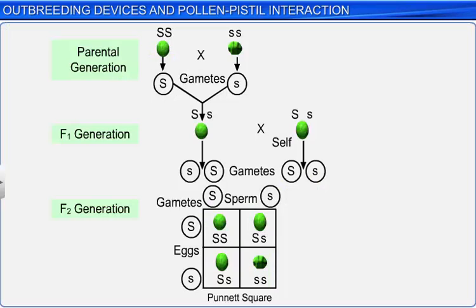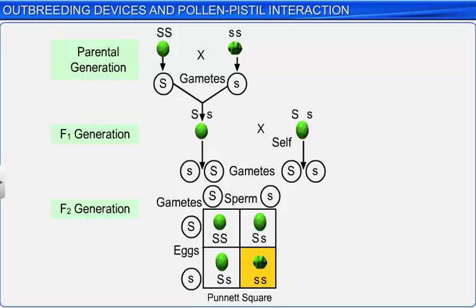In fact, when genetically similar parents self-pollinate, the offspring are more likely to have genes in a homozygous condition. Moreover, the recessive harmful or undesired alleles, which otherwise would not have expressed themselves in heterozygous parents, get expressed in the homozygous offspring. Such offspring with undesired traits also face the risk of being eliminated during the process of natural selection.